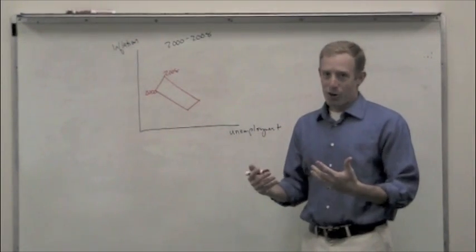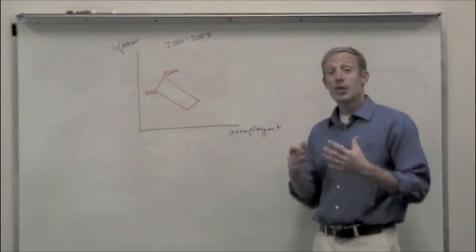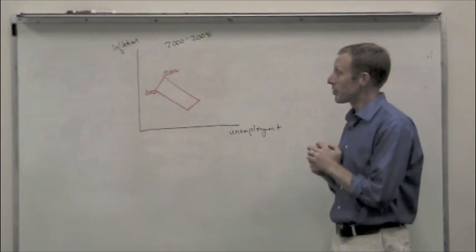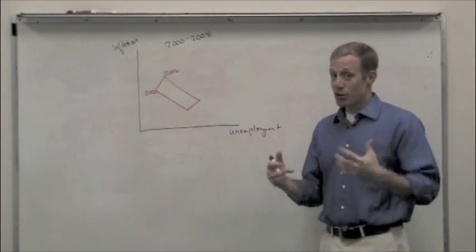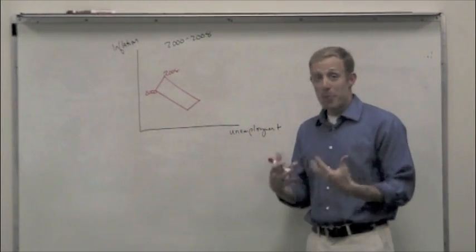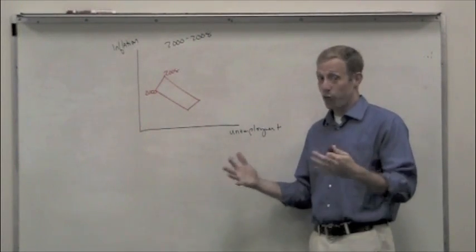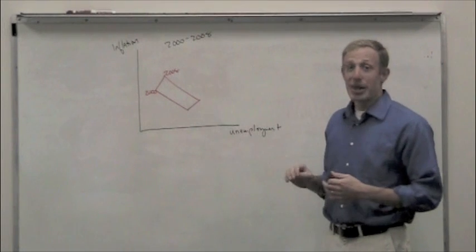So what does that mean for us in terms of policy? It means that if you believe in the Phillips curve, you believe that there is a trade-off between the two macroeconomic data sets there. And you could easily construct policy that leads you to a very, very bad outcome because a lot of the data over the course of the last 40 years has shown that that nice, neat relationship doesn't really exist.